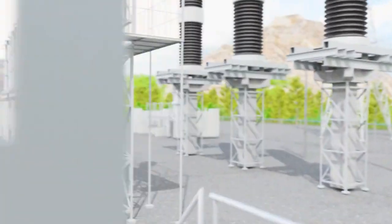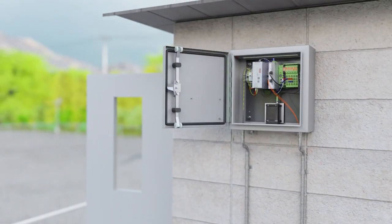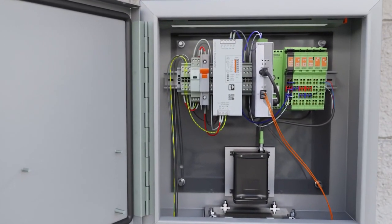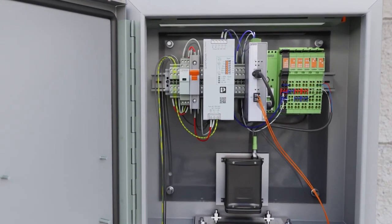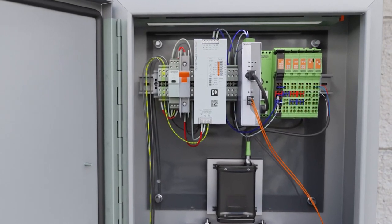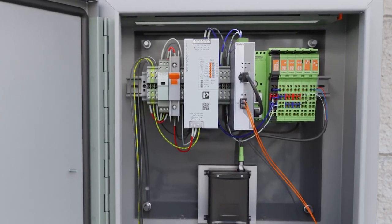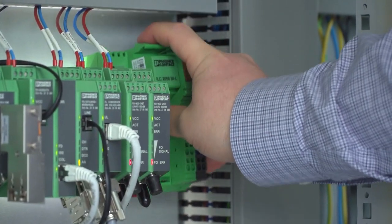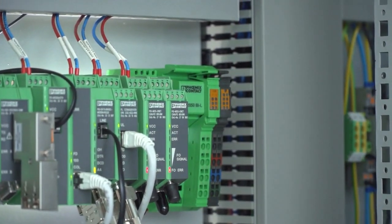ILC 2050 can be used in industrial environments as well. Here we are using the ILC 2050 BI to control an air handling unit at an automotive plant. This is only possible with the UL-508 certification of the ILC 2050 BI. These are just a few of the many applications that the ILC 2050 can be used in.